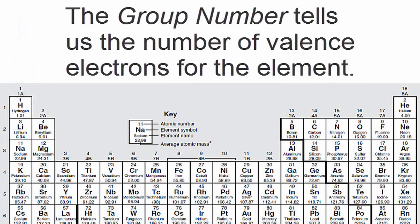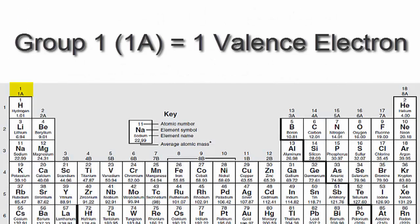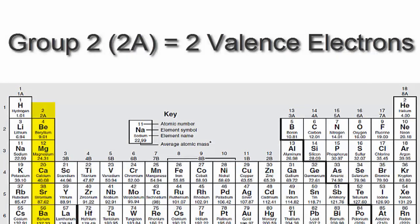hydrogen has one valence electron because it's in group 1, sometimes called 1A. If you look at group 2 or 2A, you'll see that those elements have two valence electrons.